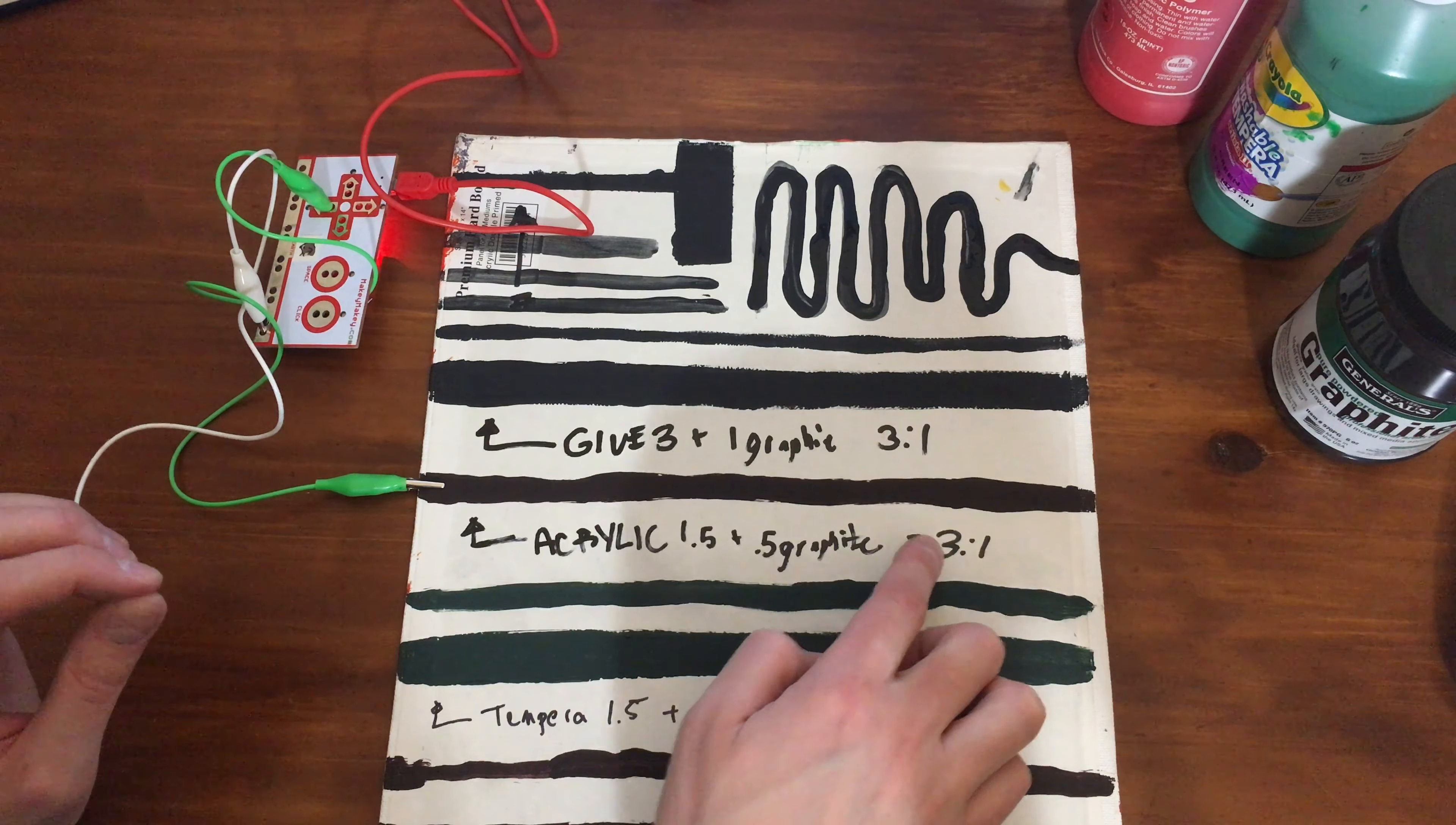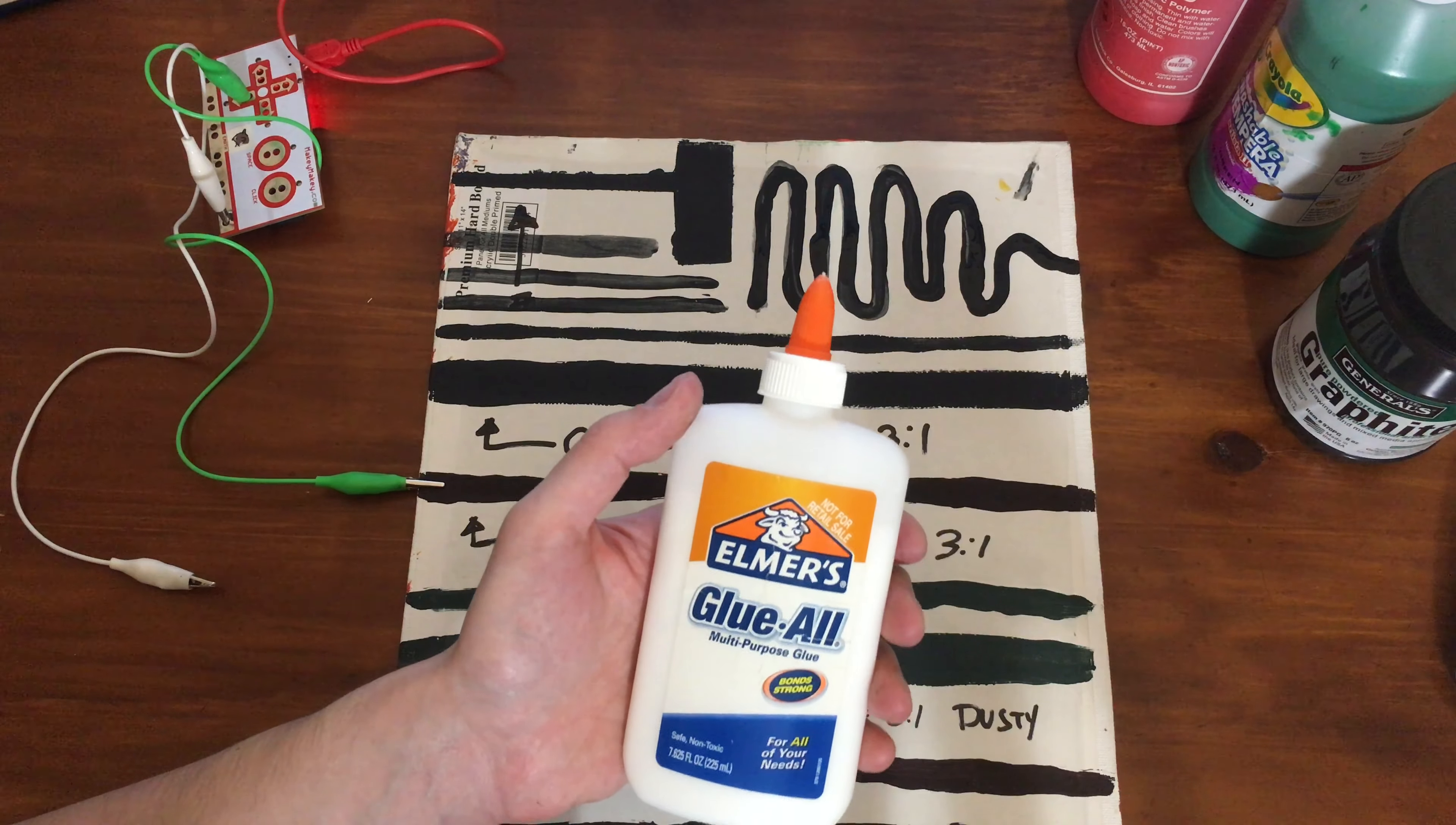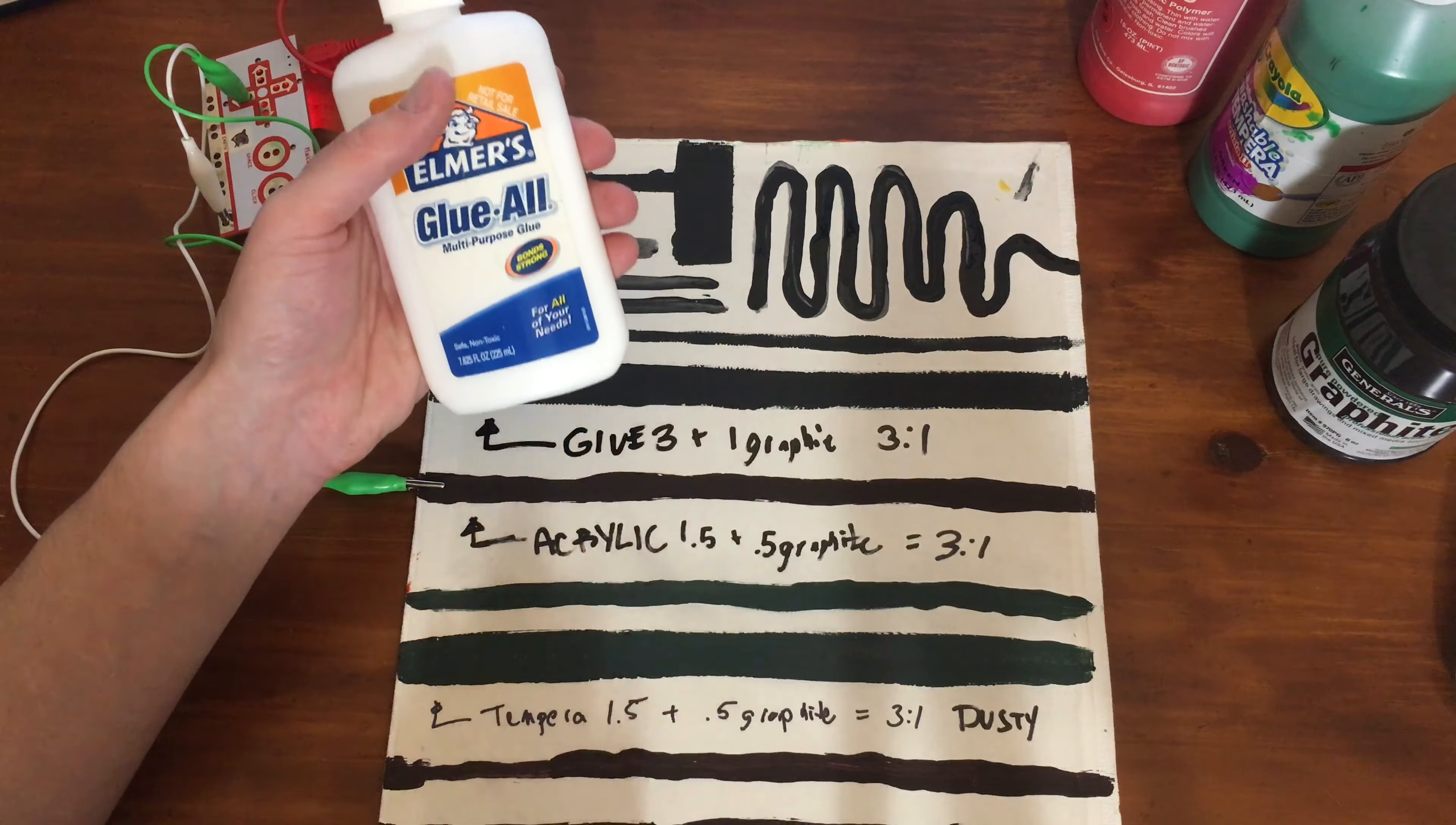When you use acrylic three to one, you've got to make it really thick. But what I had the most success with is using glue. Glue seems to work all the time, and even when you spread it really thin, which is different from the tempera and the acrylic. When those go thin, they don't work quite as well.